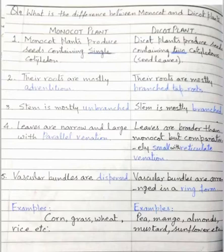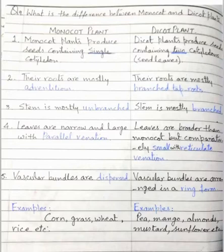In dicot plant: the stem is mostly branched. The fourth point of monocot: leaves are narrow and large in width with parallel venation.